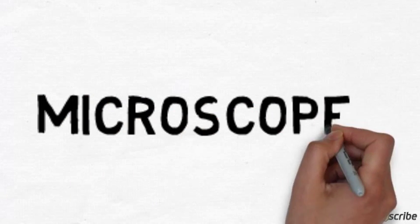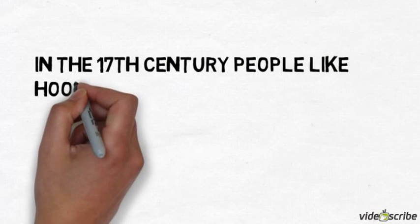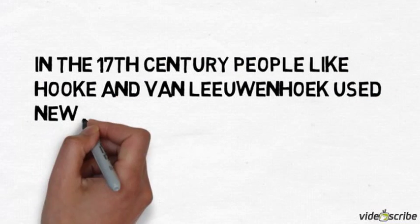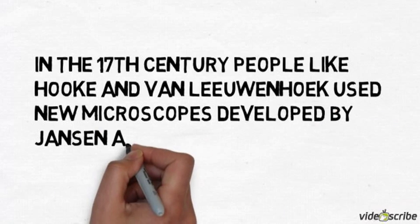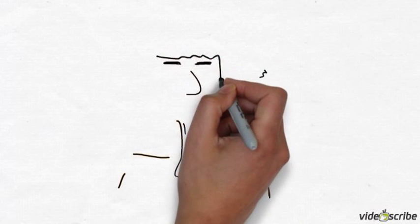We're going to look at microscopes and the history of microscopes and different types of microscopes. Microscopes were first developed in the late 16th century and then used in the 17th century to study the environment and to look at what was around in the environment.